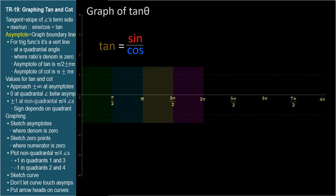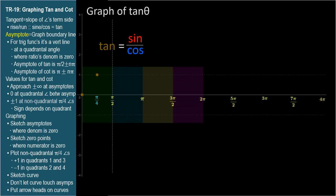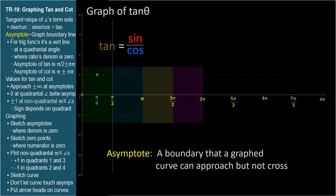Now we have enough background information to plot the graph of the tangent function. Let's plot from left to right on the theta axis the multiples of pi over four radians. The tangent of zero is zero because the sine is zero. At pi over four, the tangent is one — sine and cosine are equal, so their ratio is one. At pi over two, the tangent is undefined. It's standard practice to draw a dashed vertical line to denote an asymptote. An asymptote is a boundary that a graphed function can approach but not touch or cross.